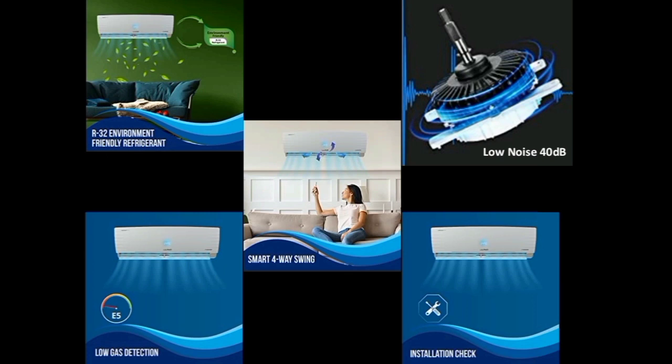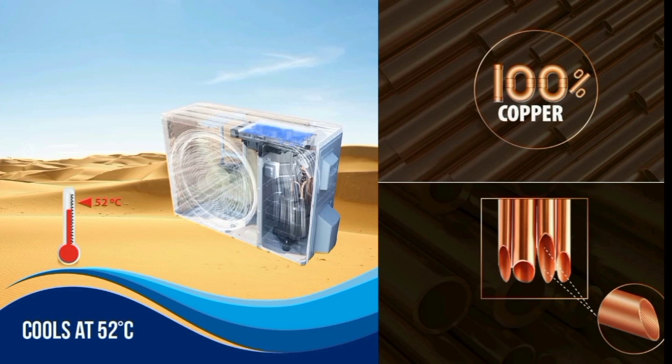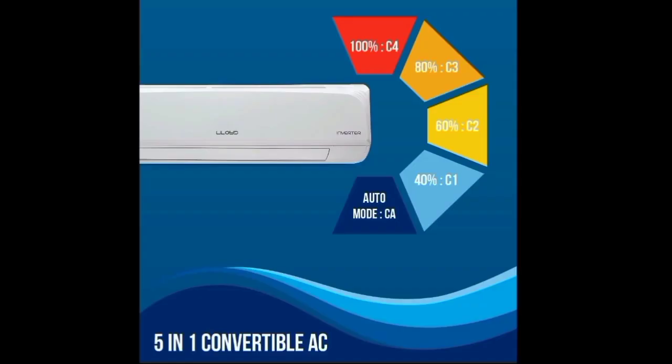Installation check — you can use the dual installation option to get the proper setup. This AC operates up to 52 degrees Celsius, so it will run even in extreme heat. It has a copper condenser, which provides better efficiency and durability at low power. An important feature is the 5-in-1 converter. The first option is auto mode — you can set the mode remotely from the room using the remote.